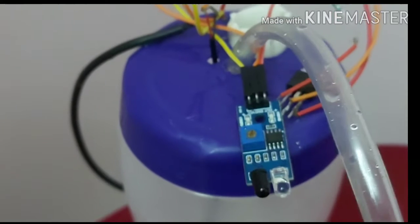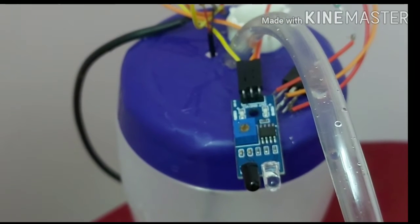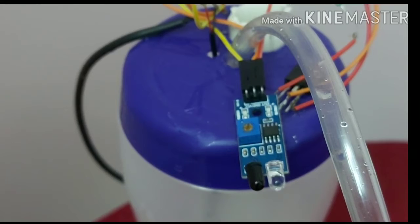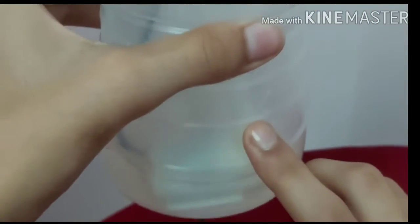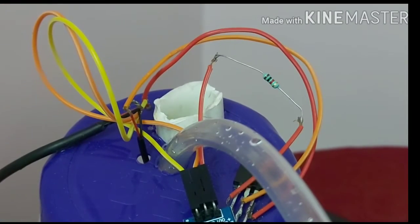First, we have to place the DC pump and insert the tubing also. This is my tubing I have inserted. So this is the DC pump and this is the tubing. We have to insert and place it in the bottom of the container.